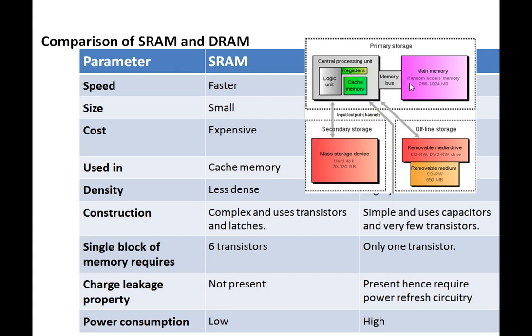Both cache memory and main memory are volatile memories used for temporary storage of variables and come under primary storage. The cache memory is located on the processor itself, whereas main memory is located on the motherboard near the processor and must be connected through a memory bus. Because of this, the access time of DRAM main memory is higher than that of cache memory, so cache memories are used for storage of frequently used variables so that the CPU can directly access them instead of the main memory.